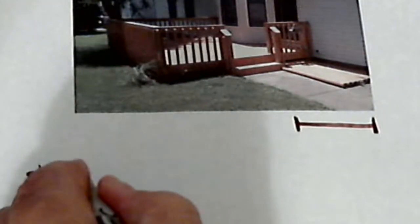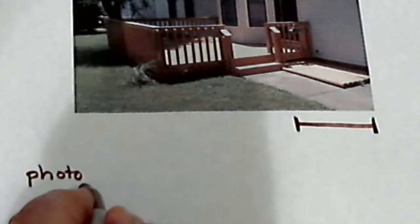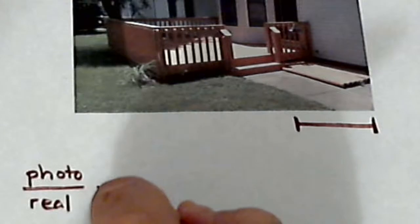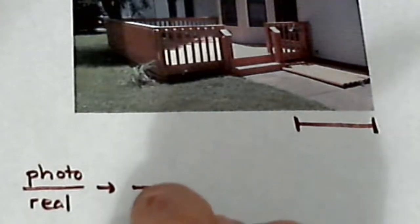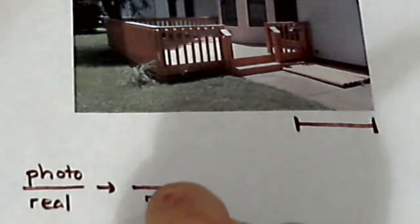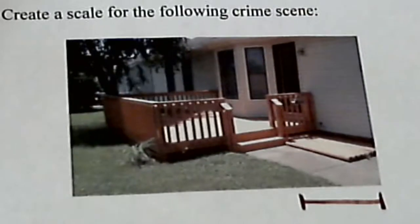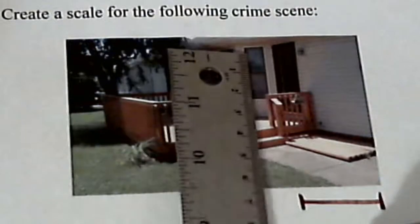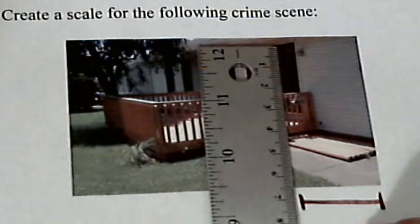So we're going to come down and set up a ratio from the photo to real life. We know that the door is 7 feet tall. So what we'll need to do now is see how big it is on the photo. We're going to take a ruler and measure the height of that door.